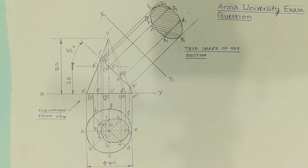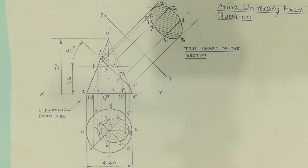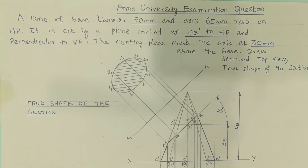So please practice. This is how the diagram appears when drawn on the drawing sheet — it should be neat and clean. This type of question carries 20 marks in the university examinations. So please practice. 35 mm above the base.